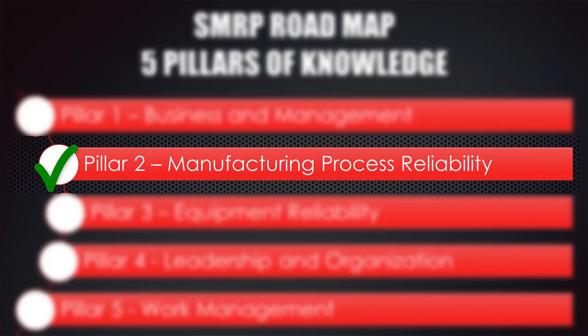Pillar 2 talks about Manufacturing Process Reliability. This subject is concerned with activities that relate to the manufacturing process of the organization to ensure that maintenance and reliability activities improve the manufacturing process.